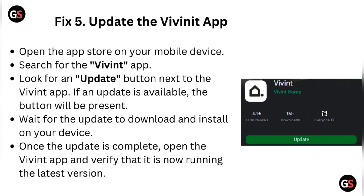Fix five: update the Vivint app. Open the app store on your mobile device and search for the Vivint app. Look for an update button next to the app — if an update is available, the button will be present. Wait for the update to download and install, then open the Vivint app and verify it is running the latest version.